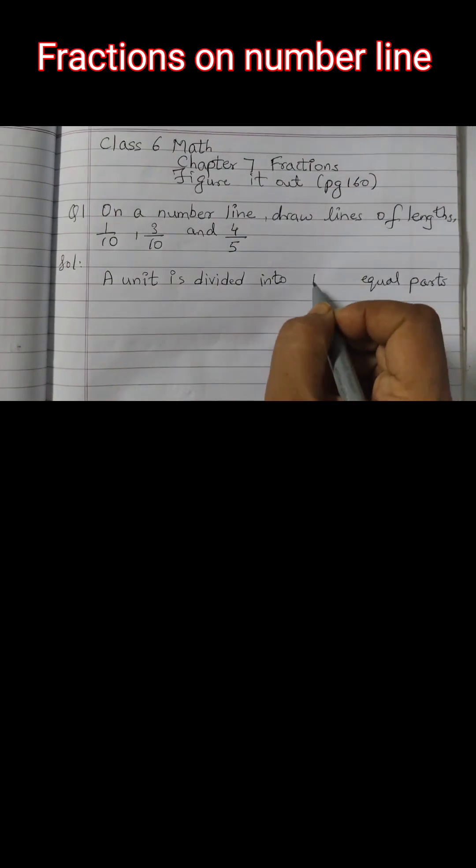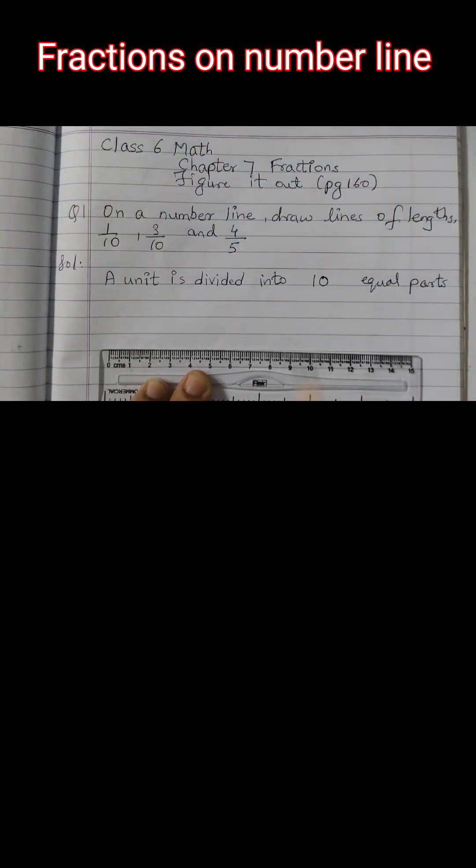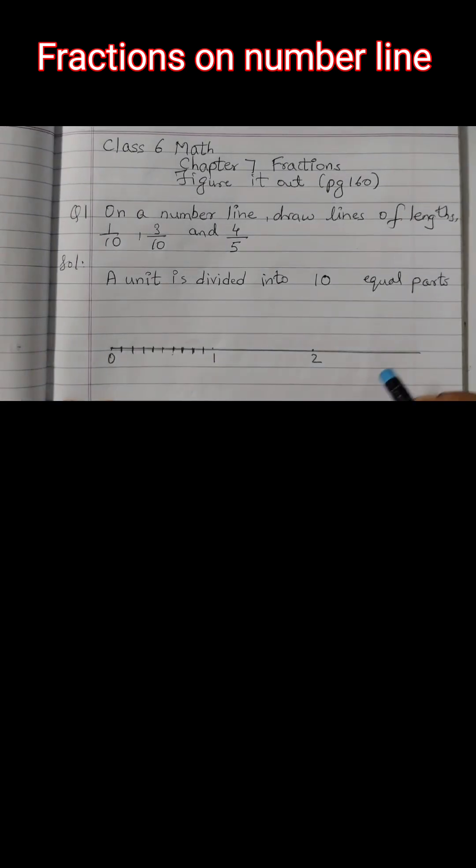Here we will divide the unit into 10 equal parts. Take a ruler and we will draw a number line here, and 1 unit is divided into 10 equal parts. So the markings: this is 1, 2, 9 and this is 10. And here we don't need this part.